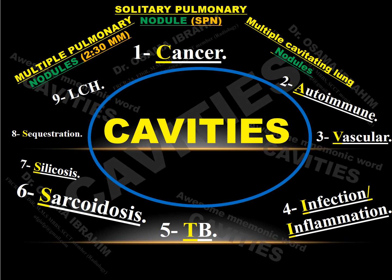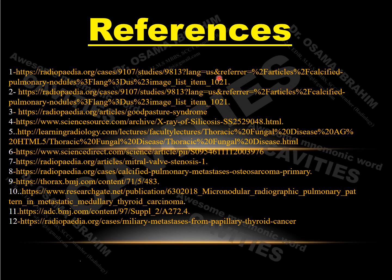In summary, this presentation is about the mnemonic CAVITIES. According to the lung pathology on the film — whether solitary pulmonary nodules, multiple cavitating lung lesions, or multiple pulmonary nodules more than 2 mm — the mnemonic provides the differential diagnosis for that pathology. The next step is to compare with concomitant radiological and laboratory findings to select one from the list. Mnemonic words like CAVITIES help you become a more confident and fluent radiology communicator. Thank you very much.